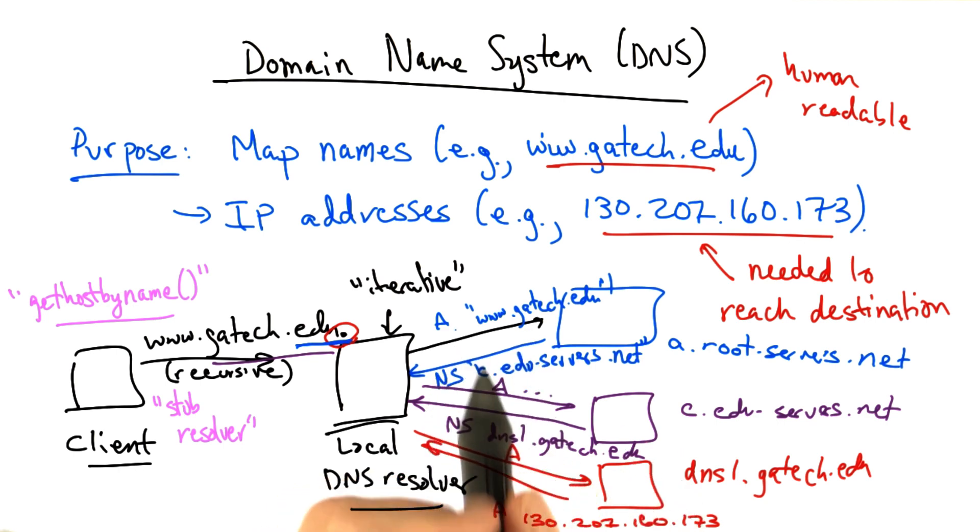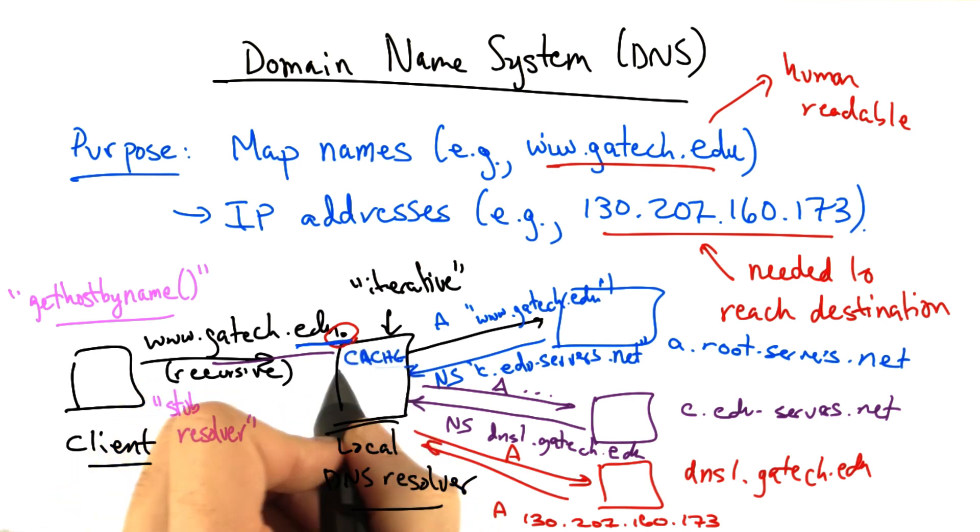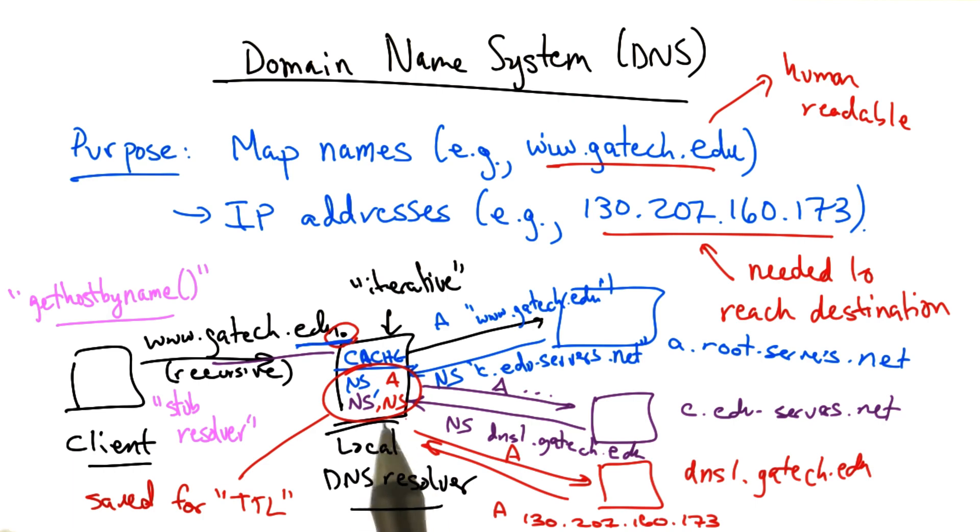Now, supposing we wanted to save the extra time and trouble of these round trip times, this local resolver would typically have a cache. It stores the NS records for each level of the hierarchy, as well as the A records. And each of these answers would be stored or cached for a particular amount of time.